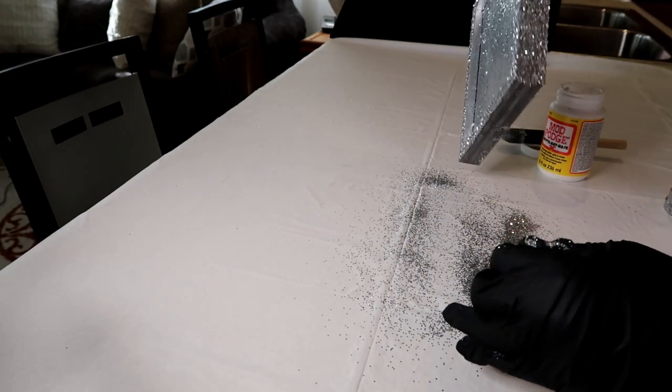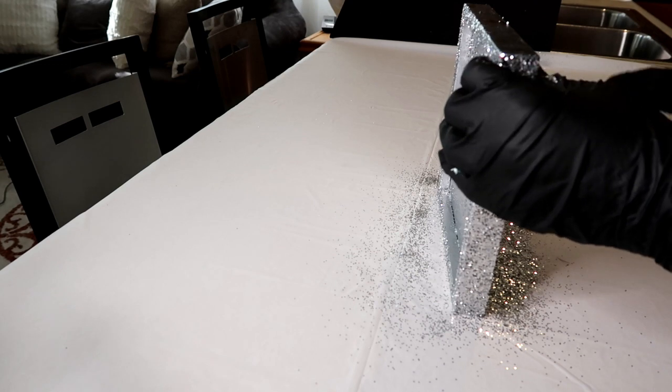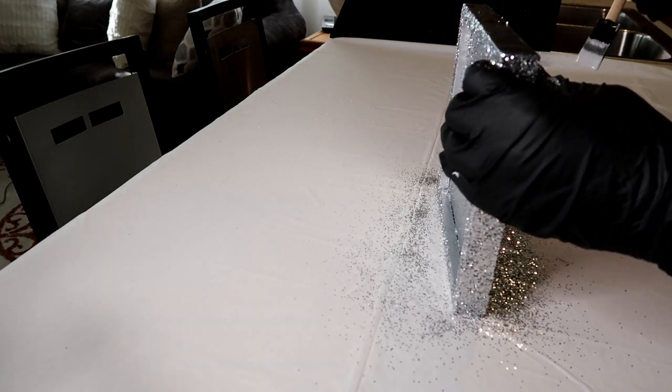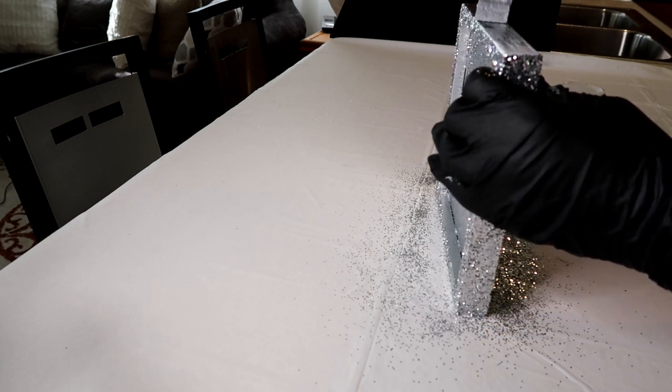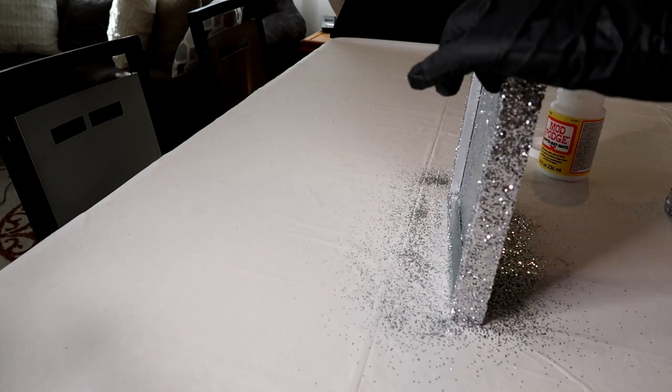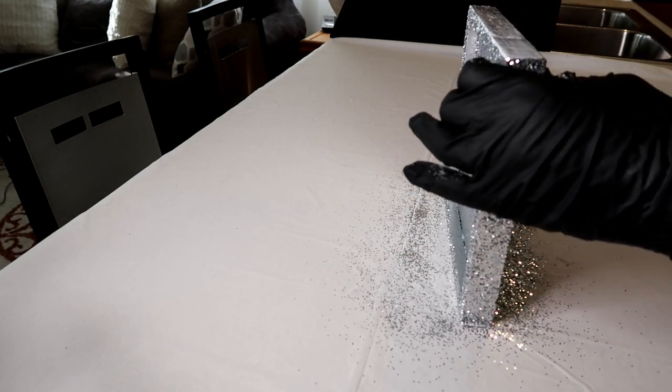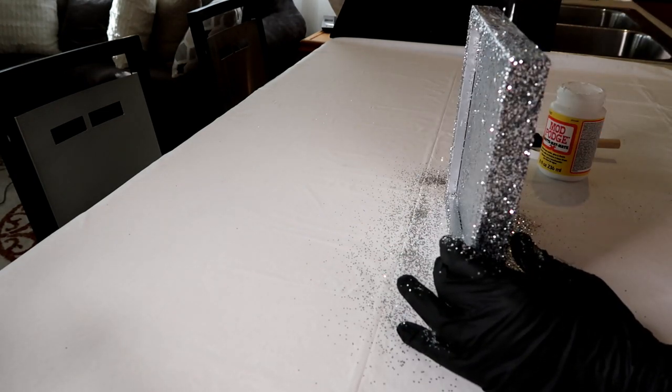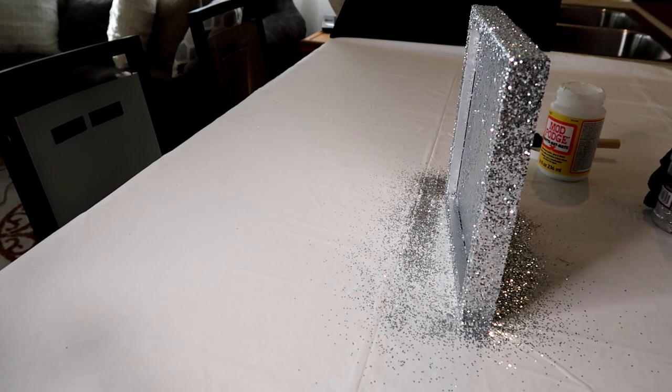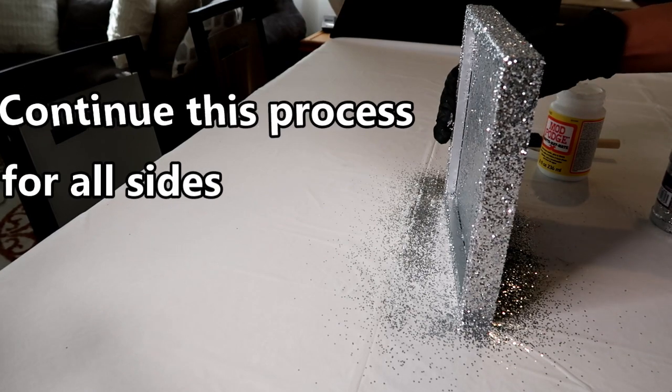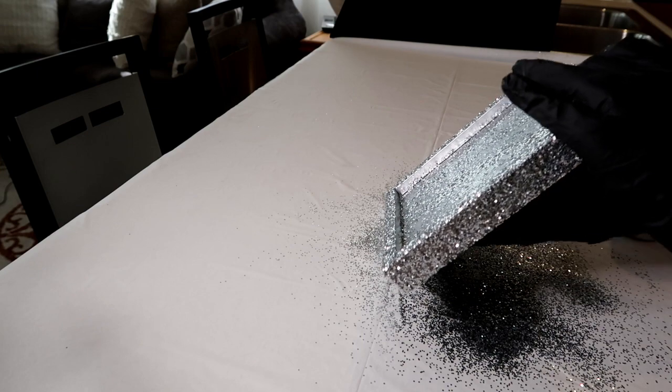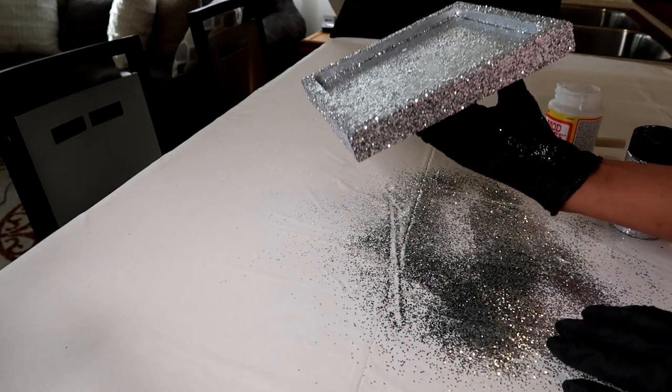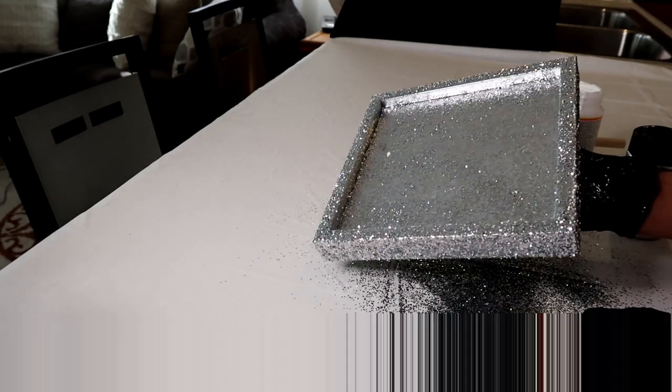It's going to just fall off. That's the good thing about it, you can reuse it and put it back in the jar. We're all set. We've got our glitter on all four sides of the tray. We're going to let this sit and dry.